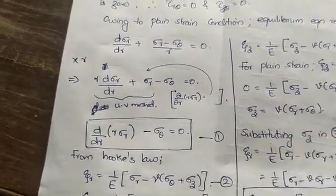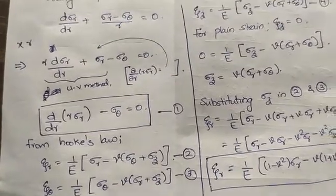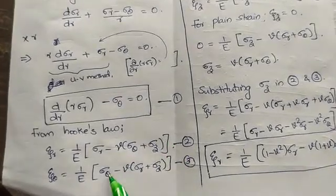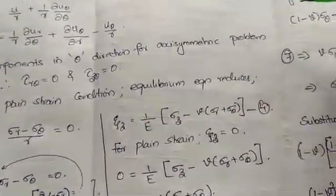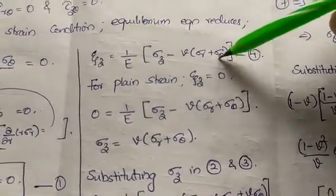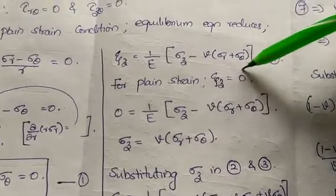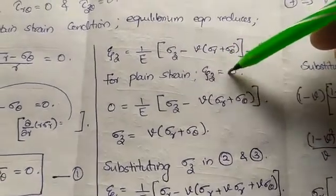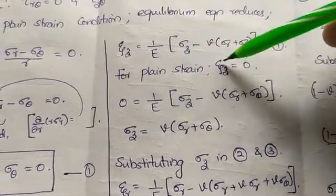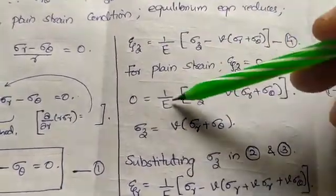Now considering Hooke's Law in polar coordinates, the equations are: epsilon_r = (1/E)(sigma_r - nu * sigma_theta), and similarly for epsilon_theta and epsilon_z. For the plane strain case, epsilon_z = 0. When epsilon_z = 0, substituting gives us the sigma_z value from the third equation.